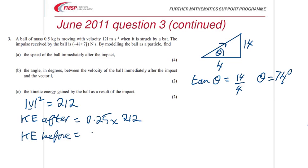was 0.25 times 12 squared, which is 144. Okay, by subtracting those, the kinetic energy gained, the KE gained, is equal to 17 joules. And that's the last part of the question, that's it finished.